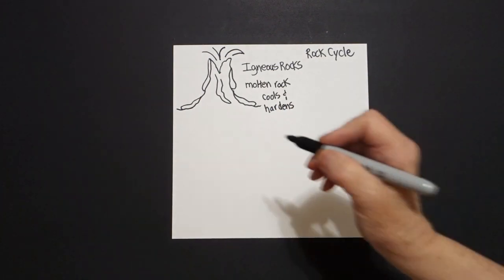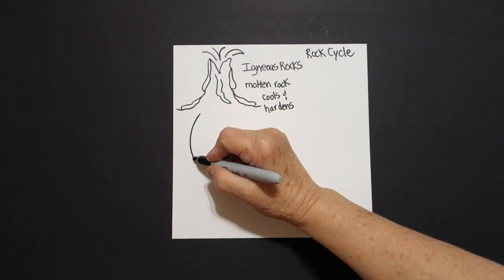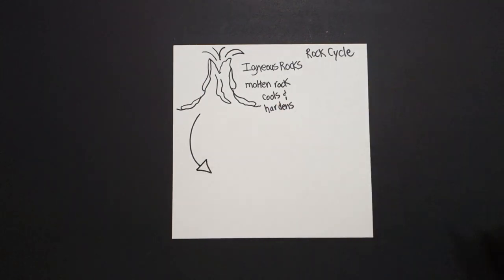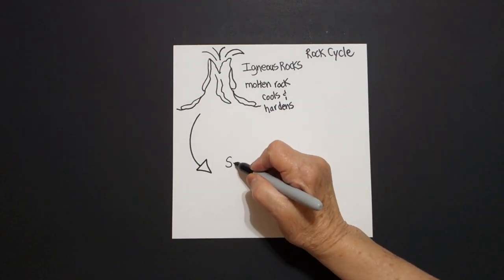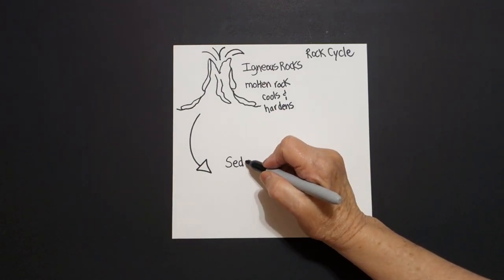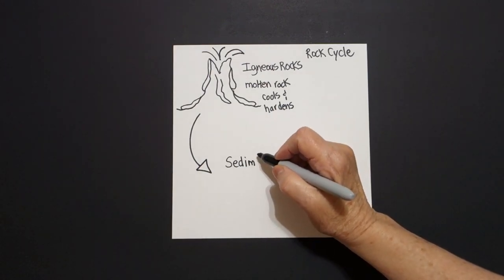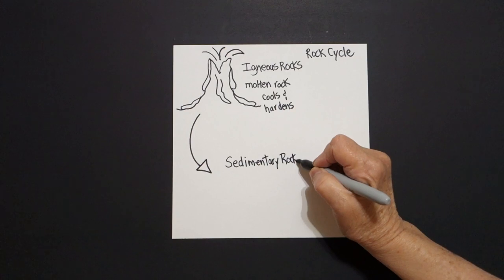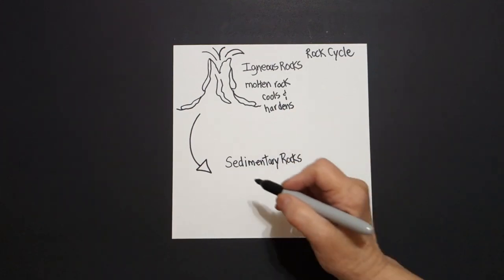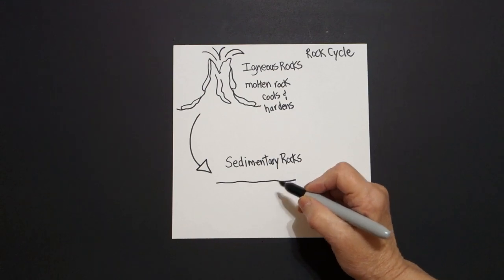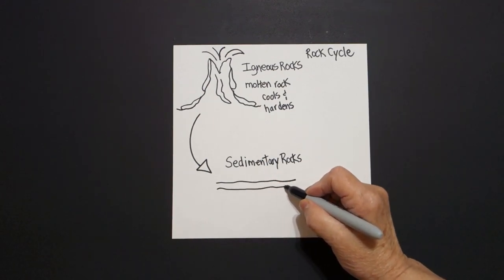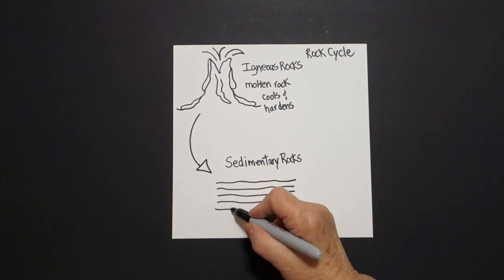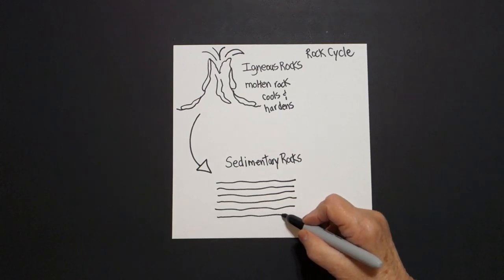Now I'm going to draw a curved line down and a triangle, because now we're going to talk about sedimentary rocks. These rocks are formed in layers. So we're going to draw slightly wavy lines — slightly wavy line, slightly wavy line, slightly wavy line.